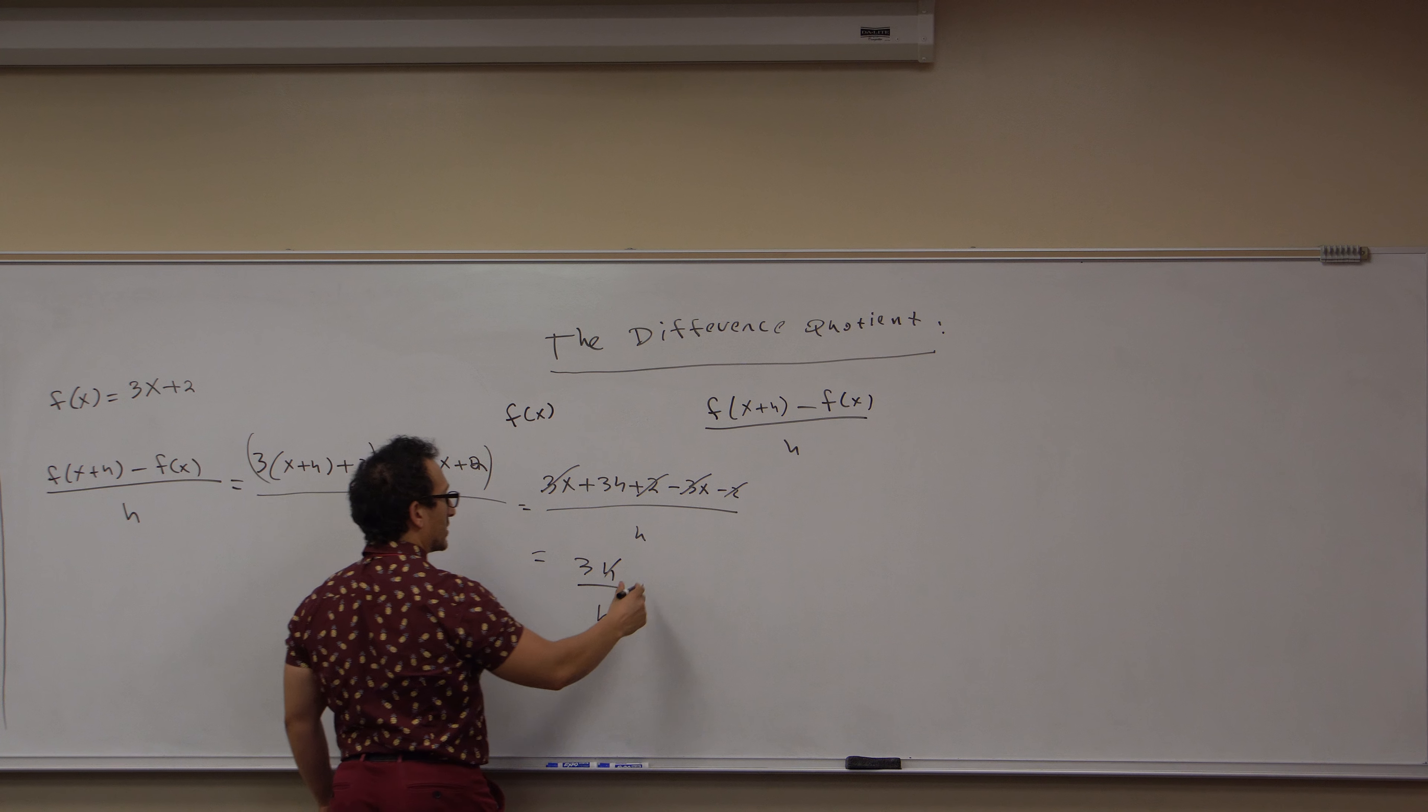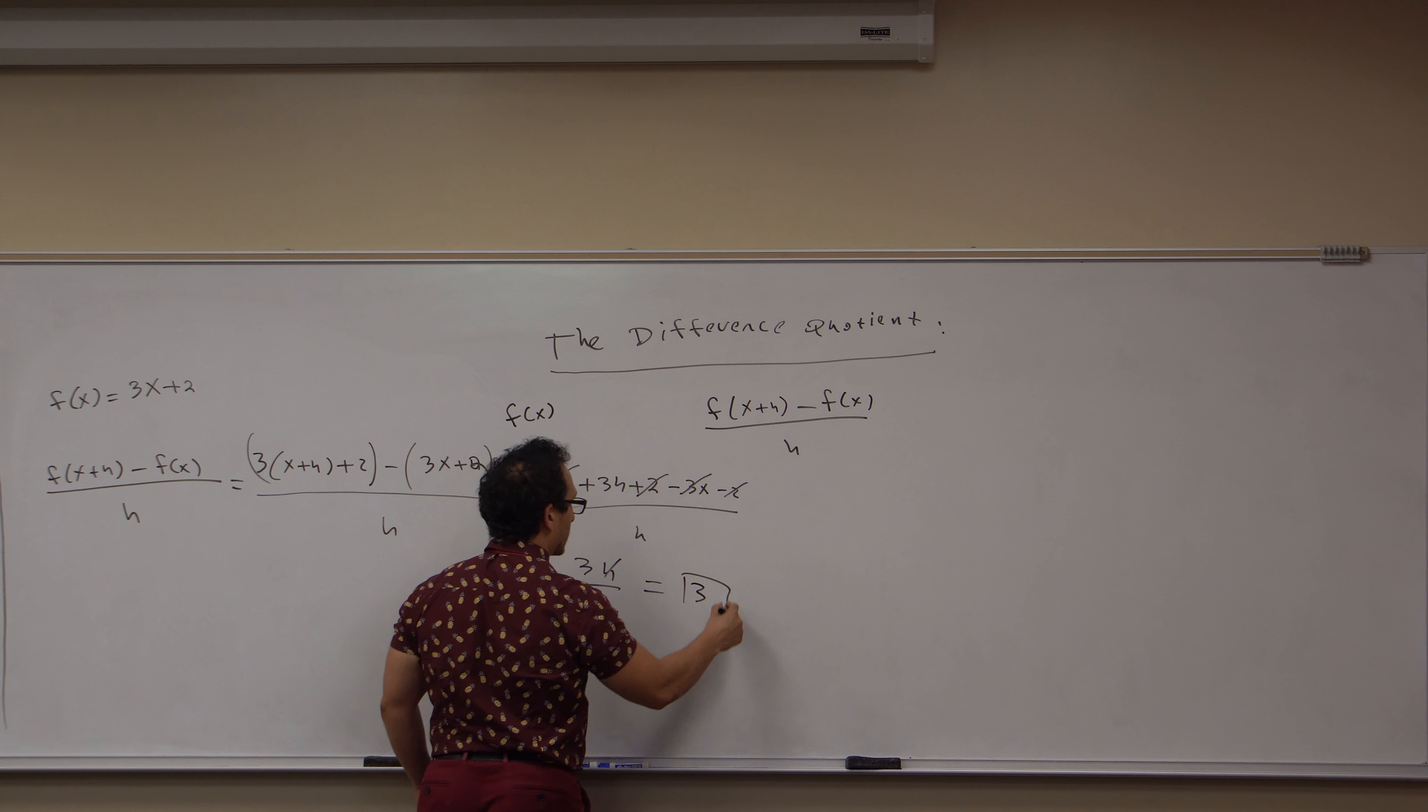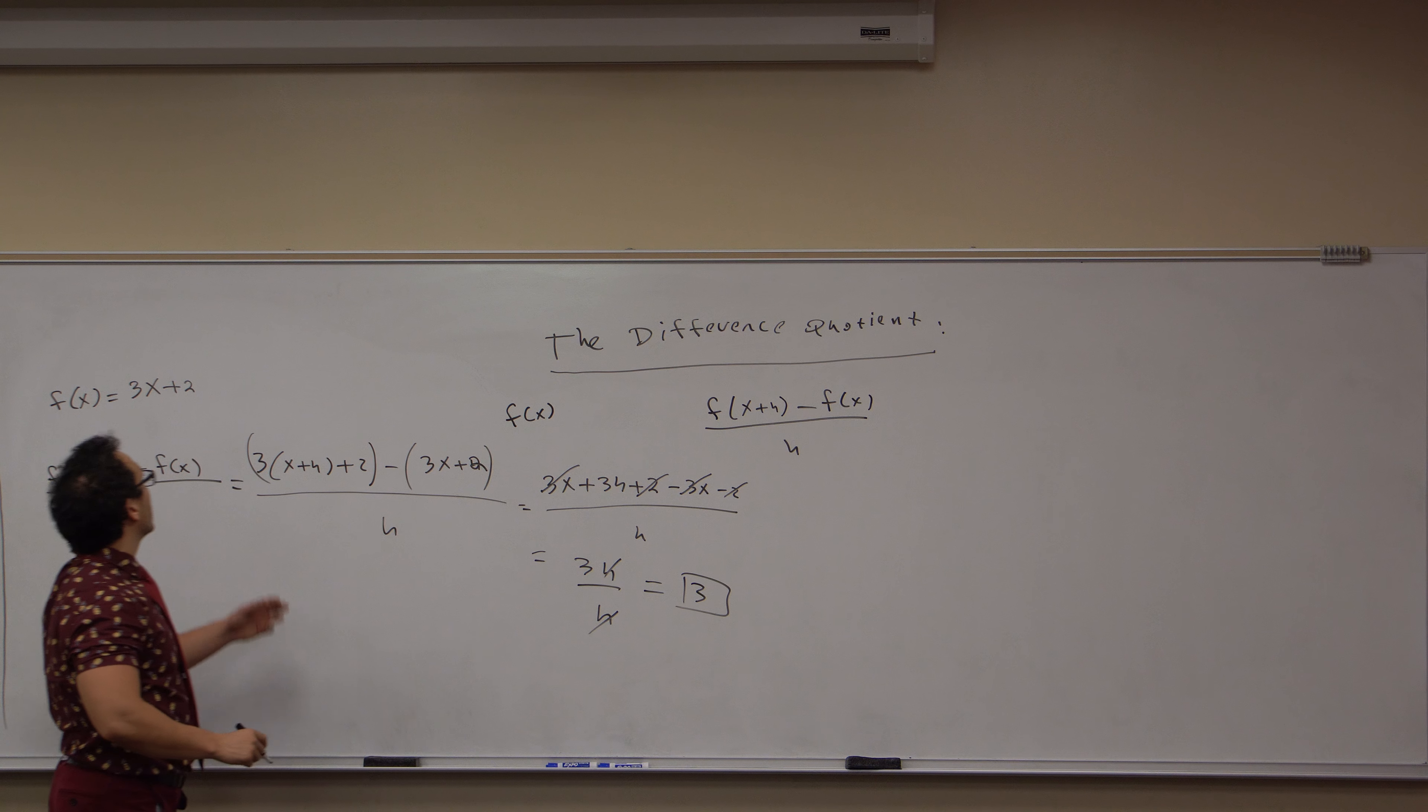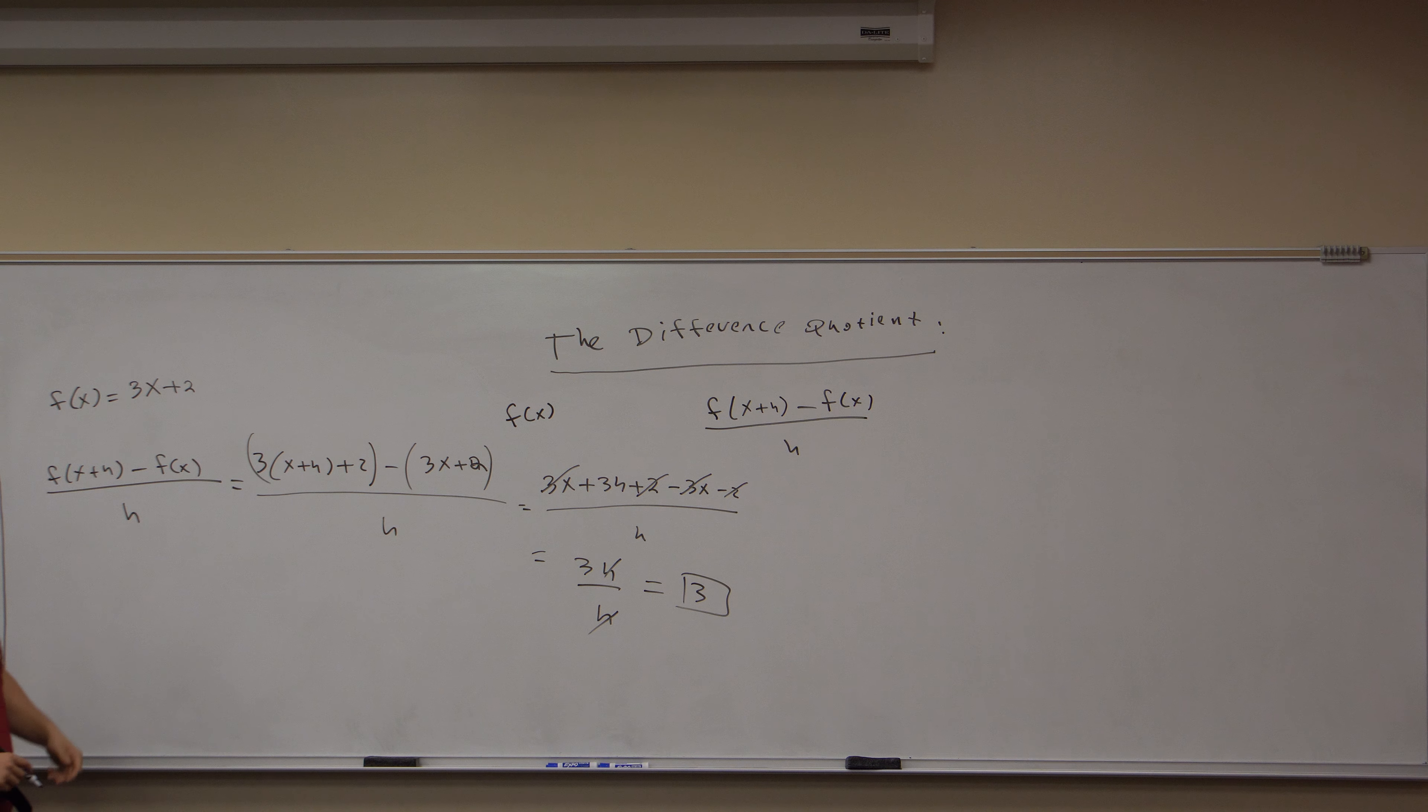I can cancel out the h's and I get that the difference quotient is 3 for the function f of x is equal to 3x plus 2.